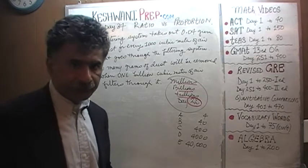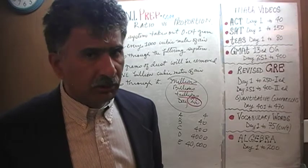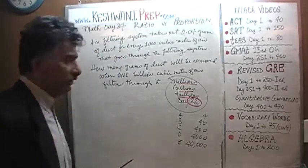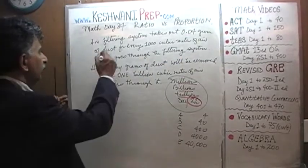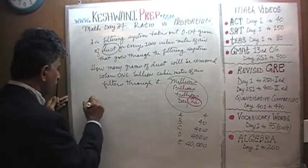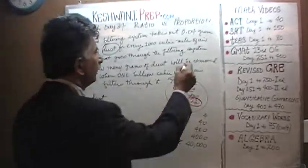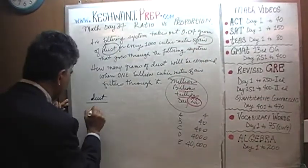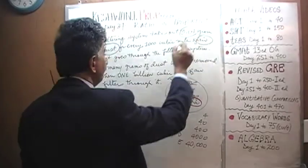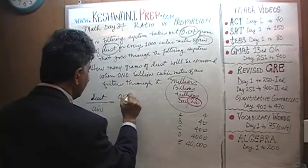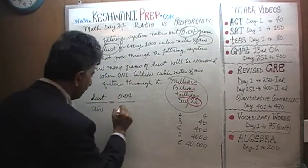All right. It is a proportion problem. The very first thing we have to ask ourselves is what are the two things that we are dealing with? The air filtering system takes out 0.04 grams of dust for every 1,000 cubic meters of air. There you go. We are dealing with dust and air.